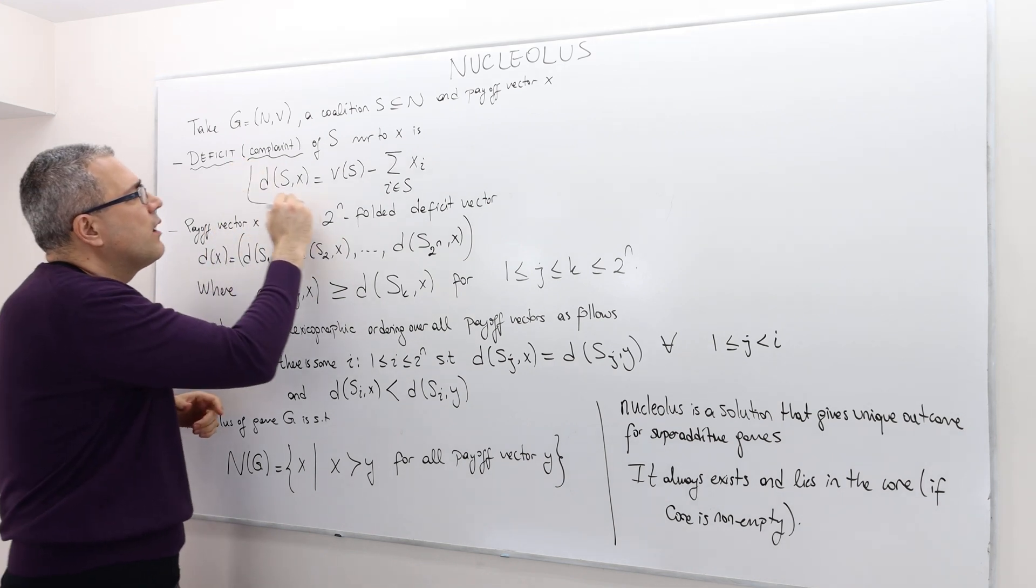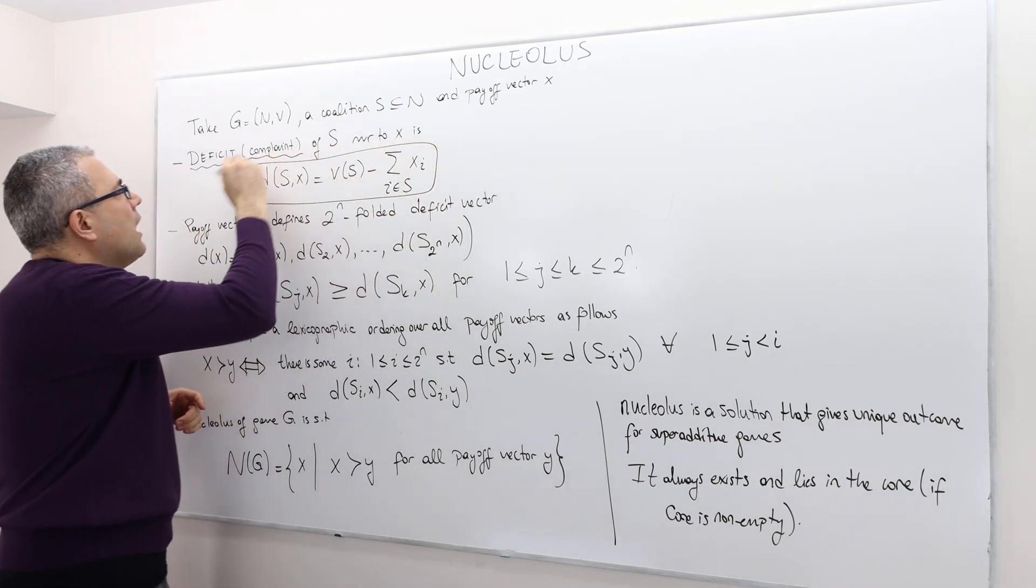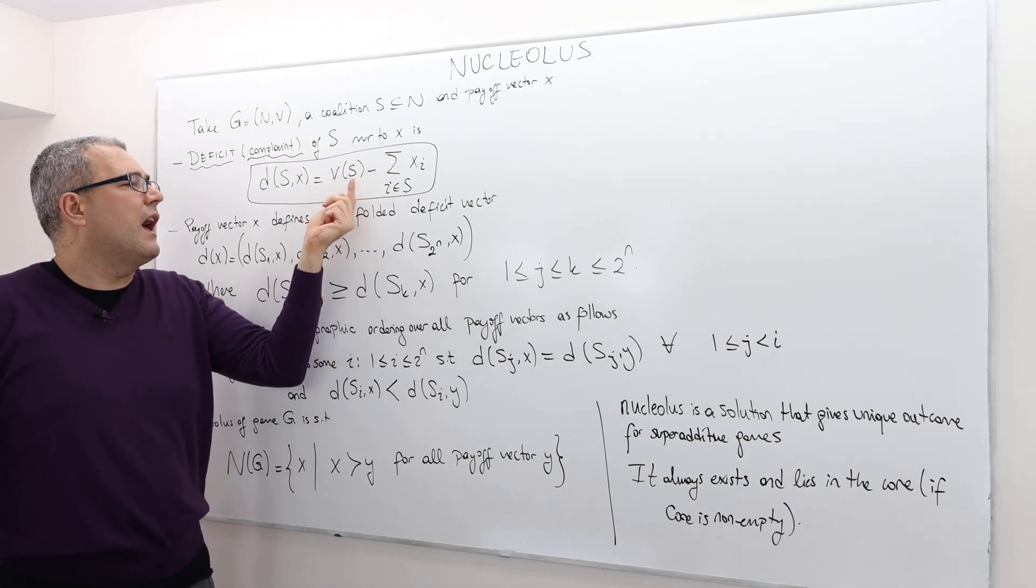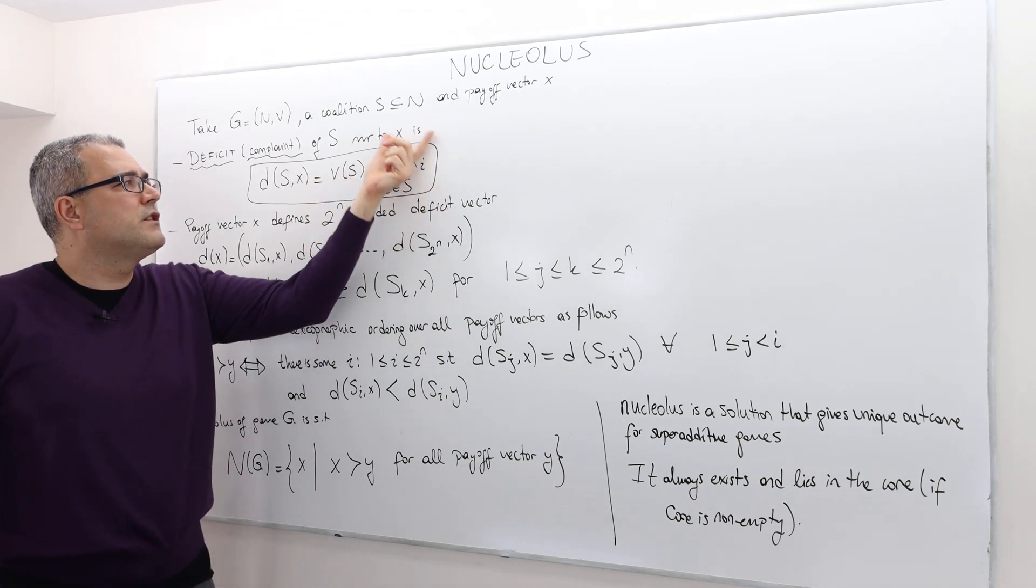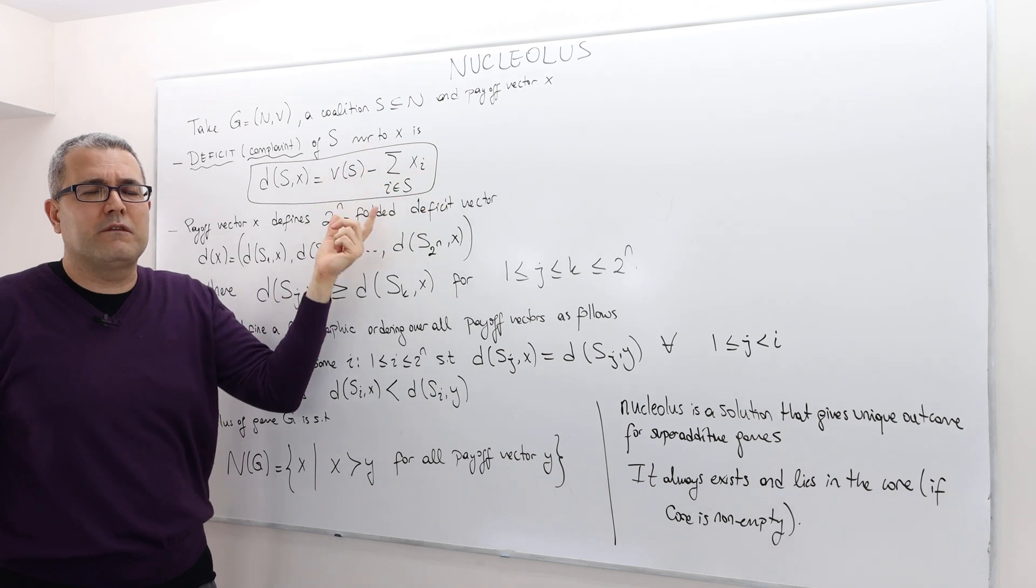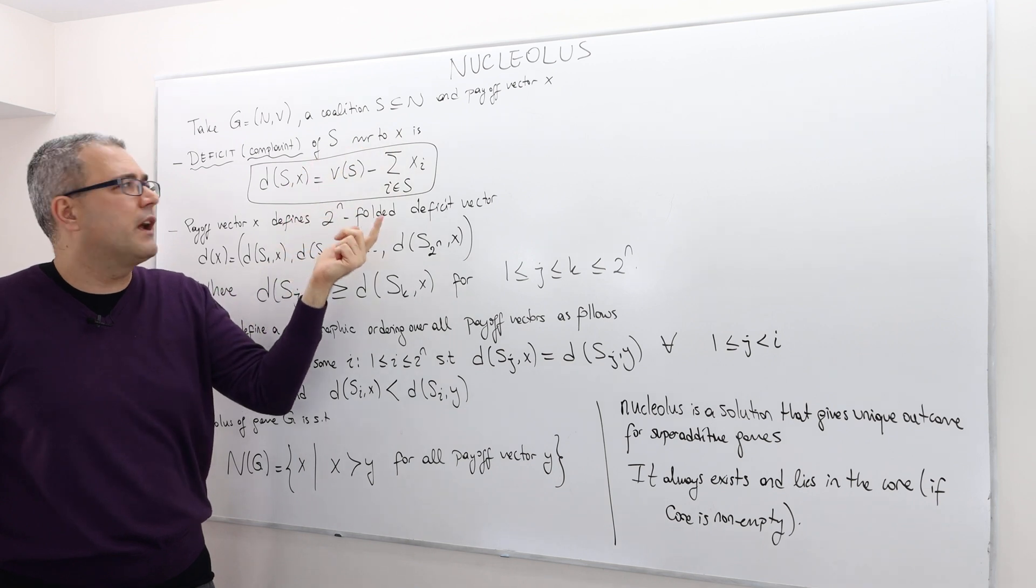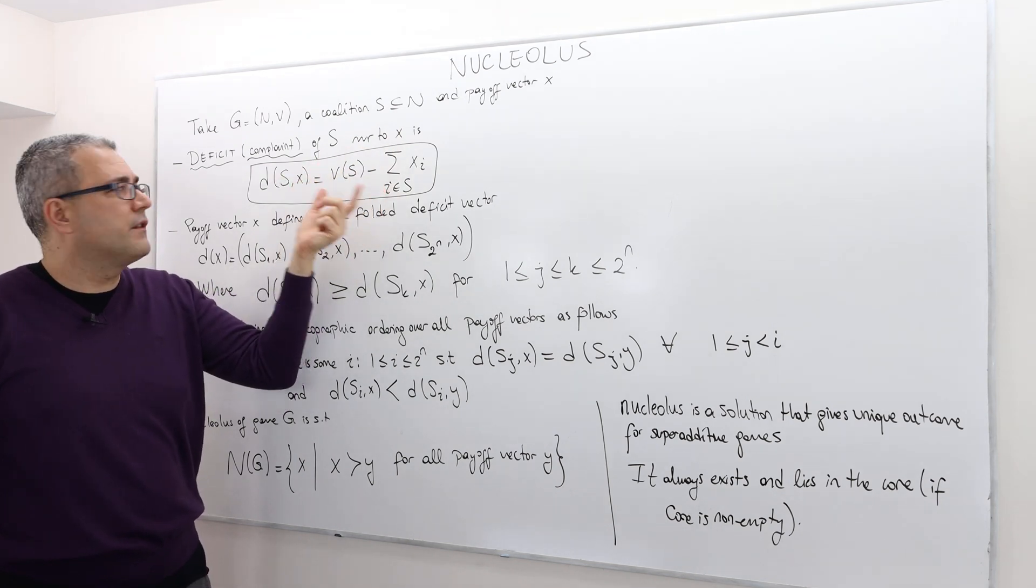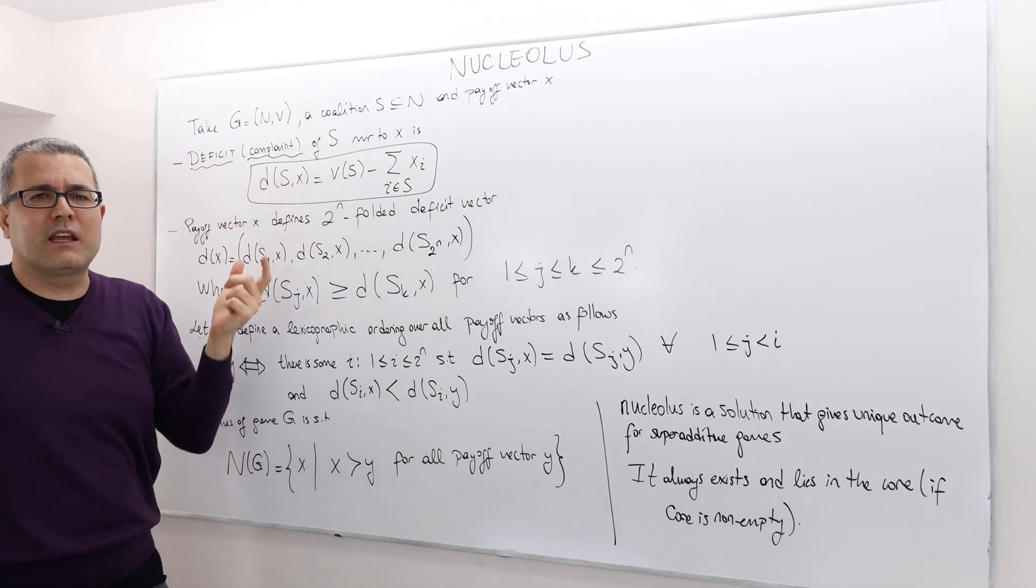This is the deficit or complain of some coalition S with respect to the payoff vector X. How do we define it? Simple. Look at the worth of coalition S, and then find the total sum of the payoffs this coalition is going to achieve under this payoff vector X. Take the difference. That difference is called complaint or deficit.